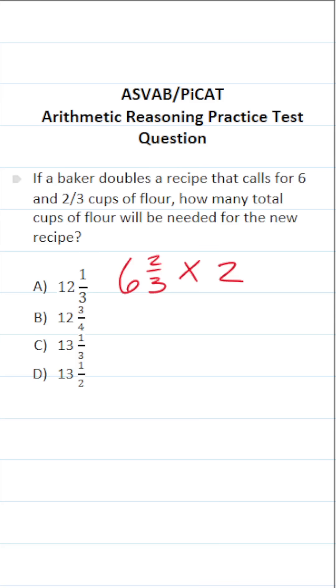The first thing I'm going to do is convert this mixed number into an improper fraction. So I'm going to do three times six, which is 18, plus two, which is 20. So this rewritten as an improper fraction is 20 over three times two.